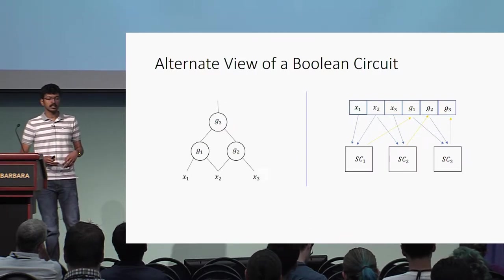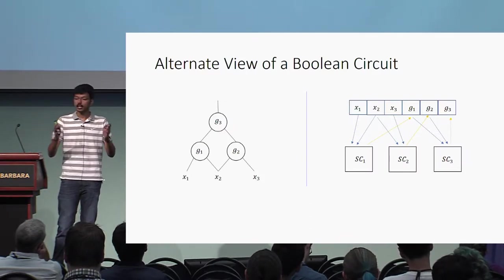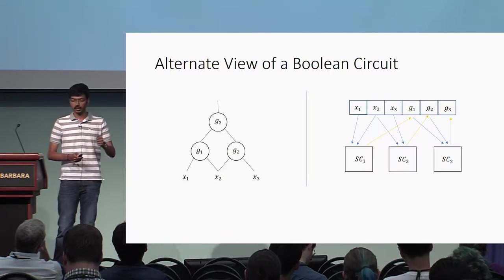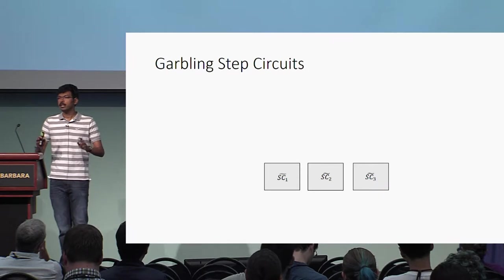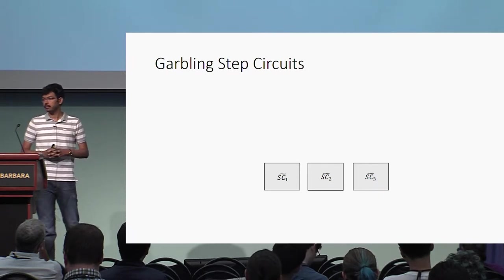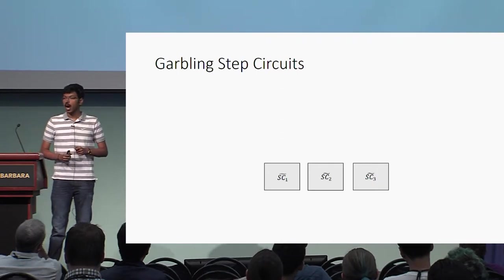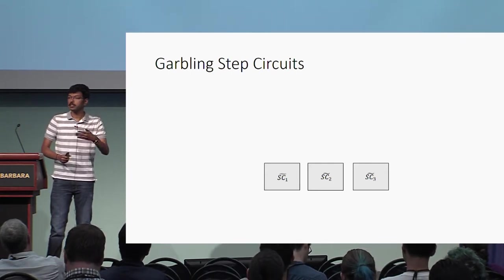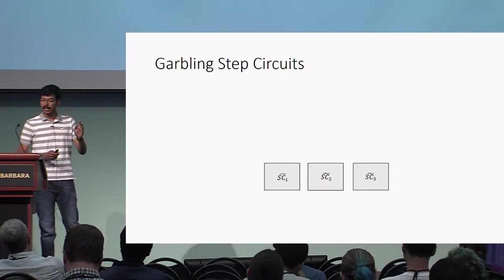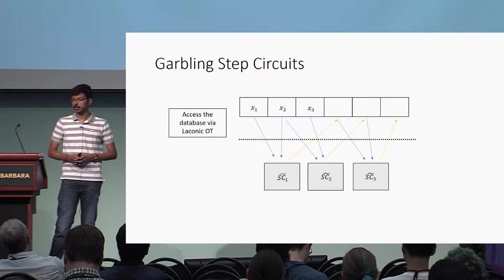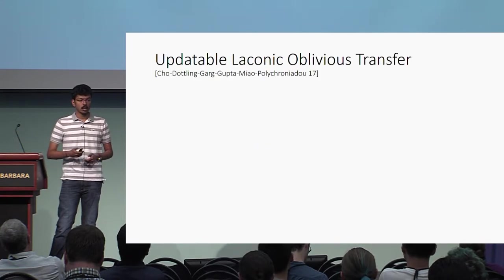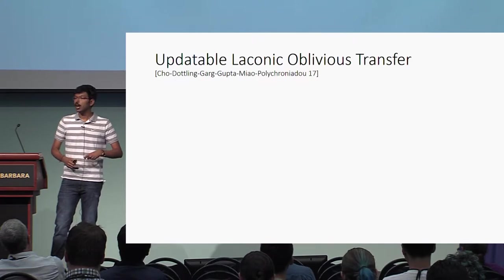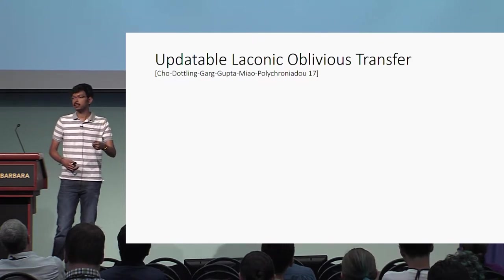To garble this Boolean circuit, it is sufficient to garble the database and garble the step circuits. The step circuits are garbled using a selectively secure garbling scheme, say Yao's garbling scheme. The main question is how do these garbled step circuits access the database — in other words, we need a mapping from the contents of the database to the labels of these garbled circuits. The main tool used in the previous work was laconic oblivious transfer.